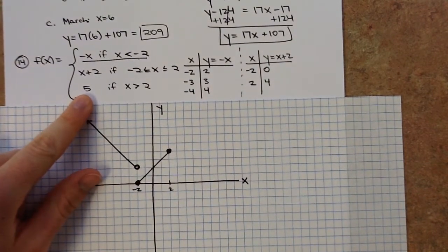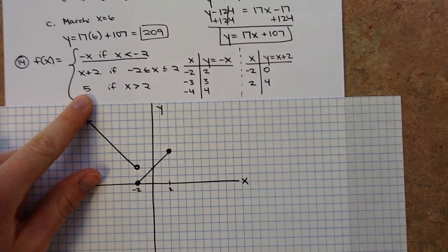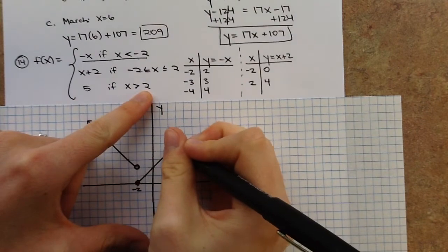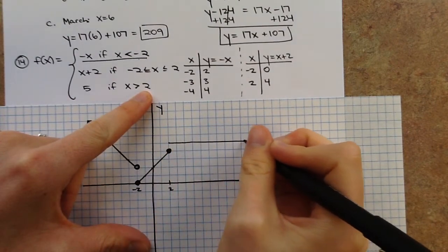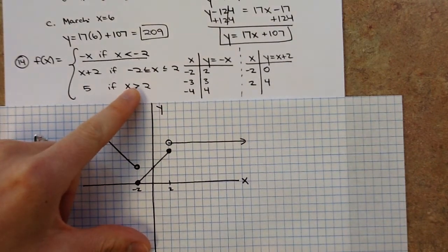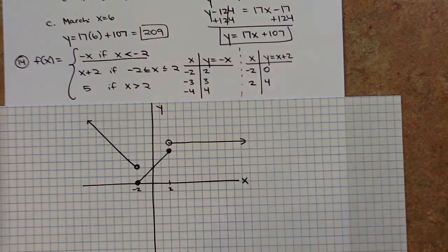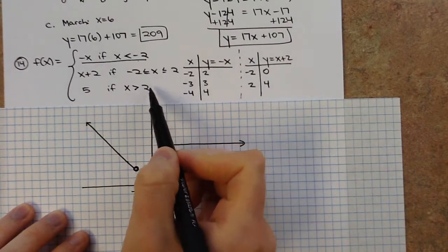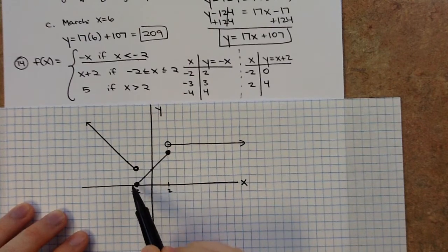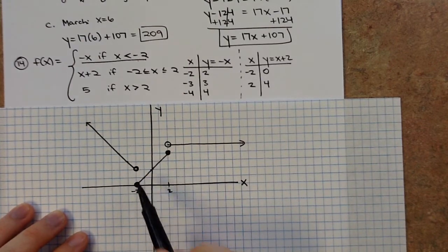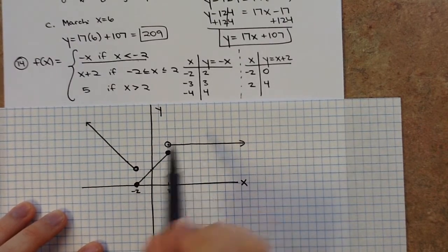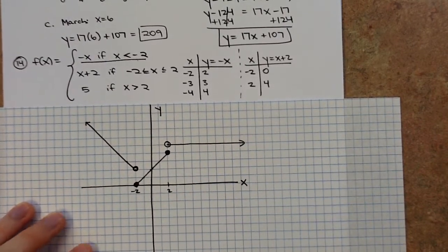The third piece is just 5 for x greater than 2 — a horizontal line at y equals 5. Start at x equals 2 and draw a horizontal line going right, finishing with an open circle since it's strictly greater than 2. The boundary x-coordinates negative 2 and positive 2 are where each piece starts and stops.